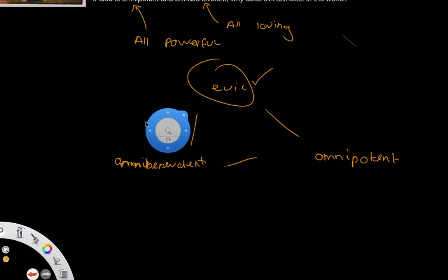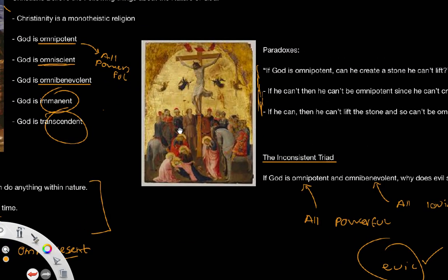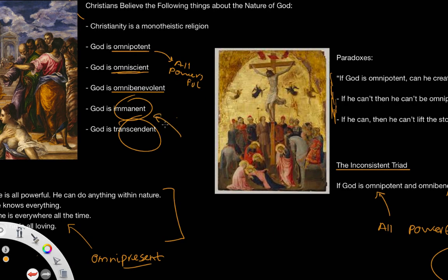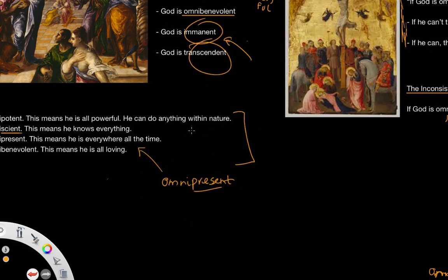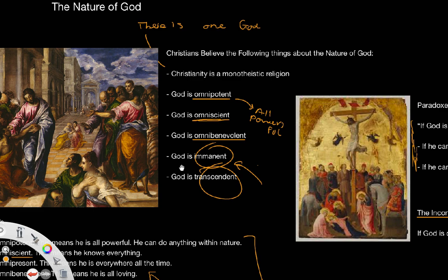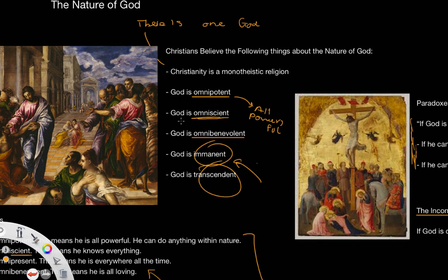So this is quite an interesting inconsistent triad. There are many other paradoxes that you can think of with these different attributes. For example, how can God be both with us, immanent with us everywhere, but also above us watching over? The explanation is he's omnipresent, so he's actually in both places at the same time. A number of little inconsistencies here, but when we look at the nature of God, these are the main attributes that God has.